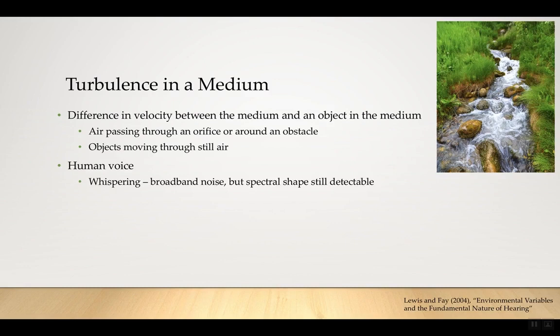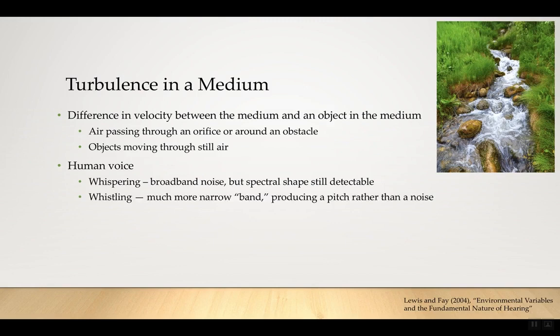A flute is an obvious example of air moving through an object, producing turbulence. In the human voice, we use this in whispering — the larynx is not engaged, the vocal cords are not touching. You're getting a broadband noise, not an individual frequency with resonances, but the mouth and throat still shape the sound. You can basically still understand the words without having the fundamental pitch produced by the voice box.